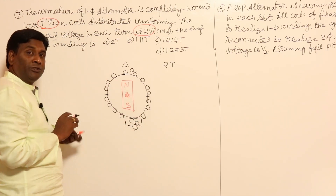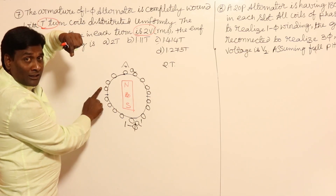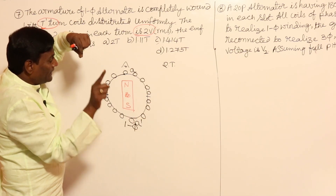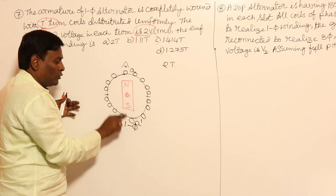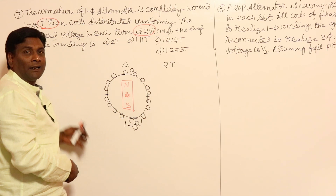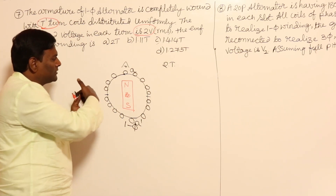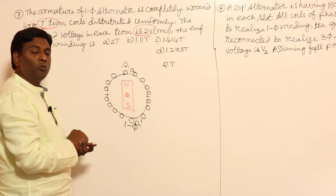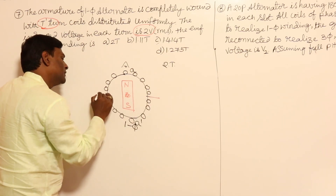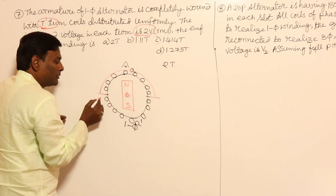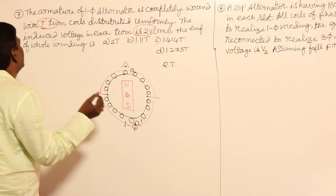Since the windings are uniformly distributed, the distribution factor must be considered. Each conductor goes back-to-back through the path, going in series. All the windings are connected in series. Because the winding is distributed, the distribution factor has to be calculated.